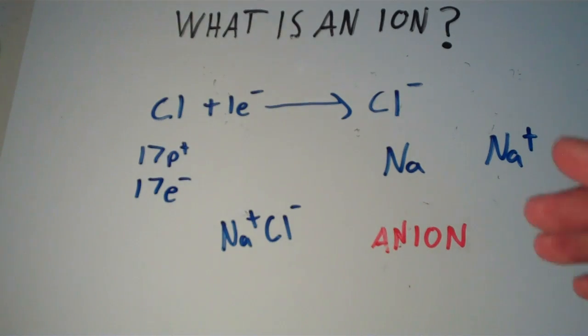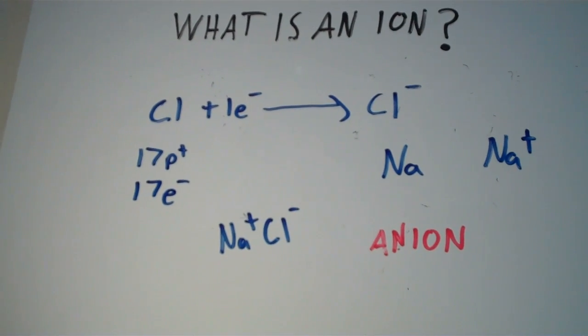And this is why when we eat sodium chloride, yes, there are ions in there, but when we eat sodium chloride, it doesn't shock us because the positive and negative charges neutralize each other. So there you go. That was just a basic lesson on what an ion is.